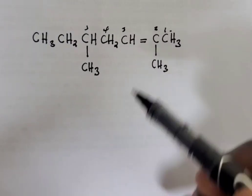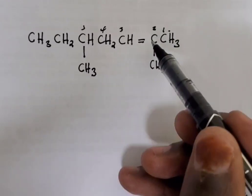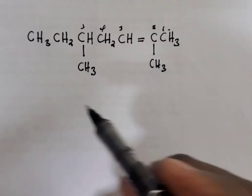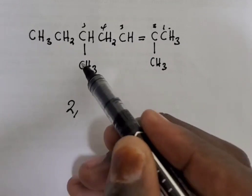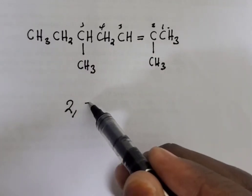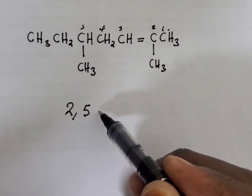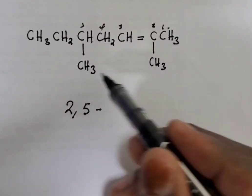On the same carbon number two, we also have a methyl. So we have two comma. Another methyl group is on carbon number five, comma five. How many are they? There are two, so it will be dimethyl.